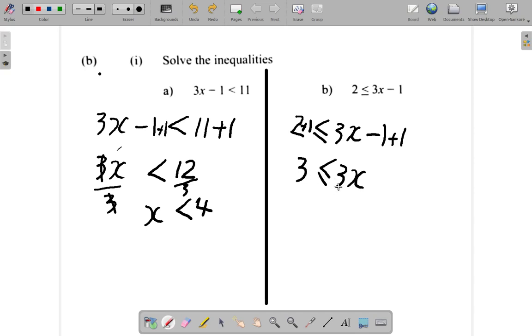Here now, I want x alone, so I divide by 3. 3 into 3, 1. I must divide this side by 3 as well. And what I have is 1 is less than or equal to x. If I turn it around, I get x is greater than or equal to 1.